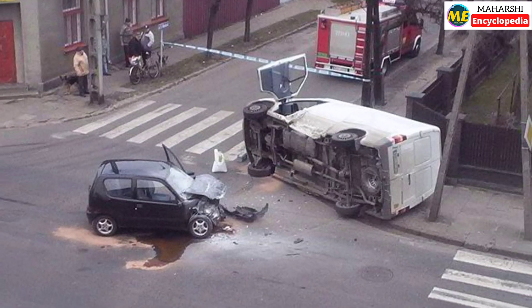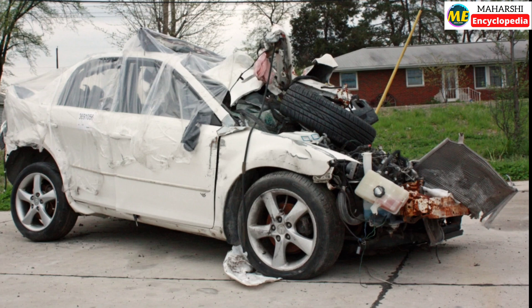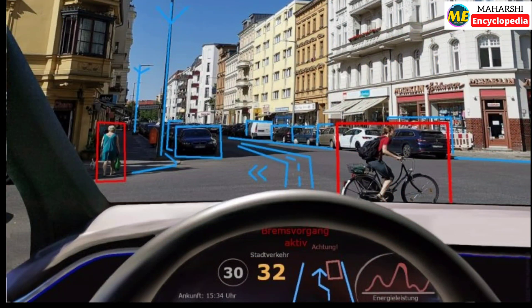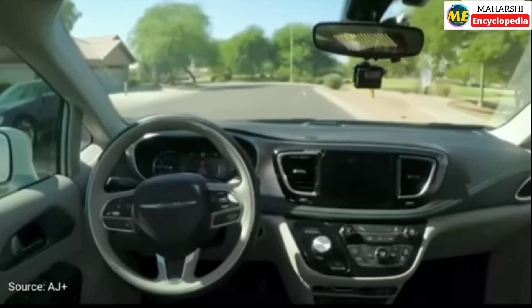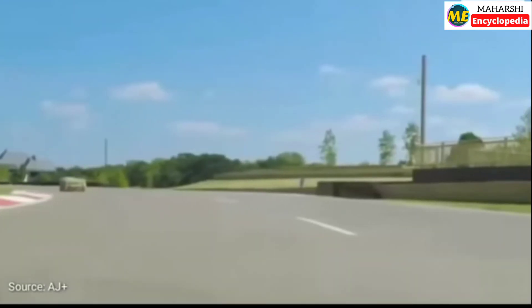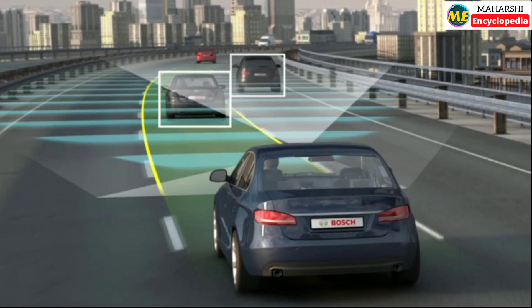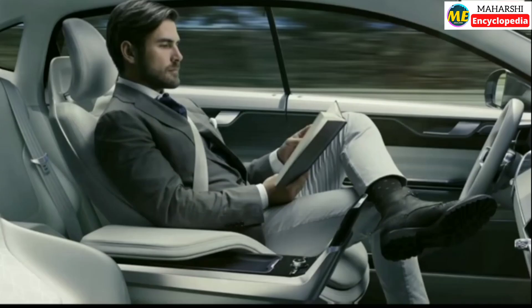For example, 90% of accidents that happen now are caused by human error. But the self-driving vehicles with artificial intelligence can prevent 90% of these accidents by interacting with oncoming vehicles, understanding the situation around them, and reacting accordingly.